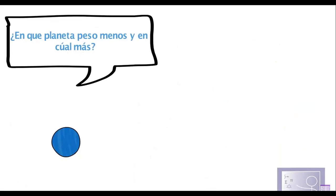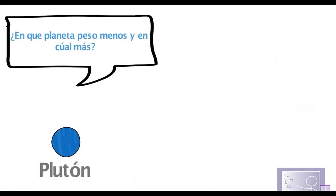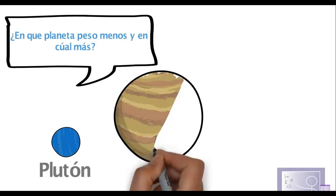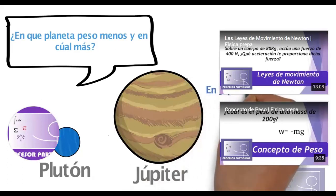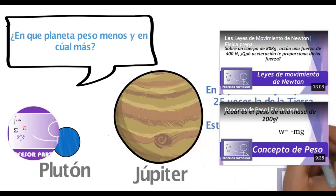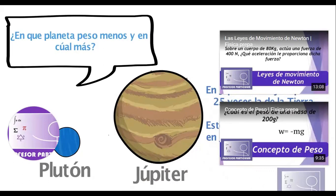Del sistema solar, el planeta más pequeño hasta hace muy poco, y que ya no es considerado como planeta del sistema solar, es Plutón. Al ser más pequeño y tener menos masa, nos ejerce menos fuerza de gravedad; ahí pesaríamos menos. Pero Júpiter, que es el planeta más grande, ejerce una fuerza de gravedad aproximadamente 2.5 veces el peso de un objeto con respecto a la Tierra. Esto es que si pesamos 50 kilogramos en la Tierra, en Júpiter llegaríamos a pesar 125 kilogramos.